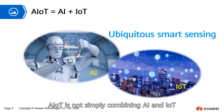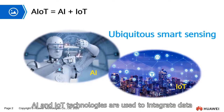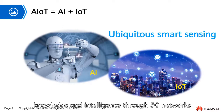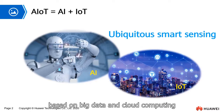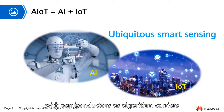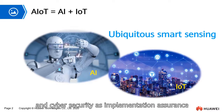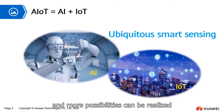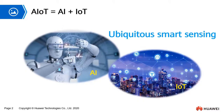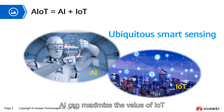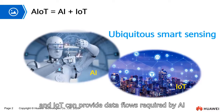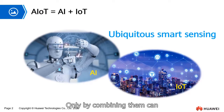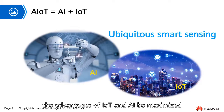AIoT is not simply combining AI and IoT. AI and IoT technologies are used to integrate data, knowledge, and intelligence through 5G networks based on big data and cloud computing, with semiconductors as algorithm carriers and cyber security as implementation assurance. More application scenarios can be implemented, and more possibilities can be realized when AI is applied at the application layer. AI can maximize the value of IoT, and IoT can provide data flows required by AI. Only by combining them can the advantages of IoT and AI be maximized.